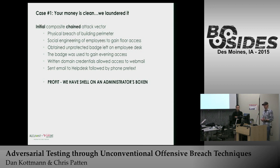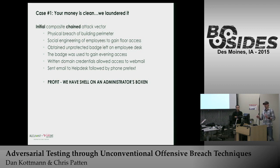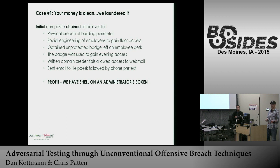Once inside, we walked through multiple floors doing an inventory to figure out how to establish persistent access. We identified that a woman had left her badge unprotected on her desk while she was away. We took that badge. We wanted a useful badge to come back after hours, and we also wanted to understand whether they would decommission a badge if it was reported and if there was any event monitoring or alerting associated with a reported missing badge.